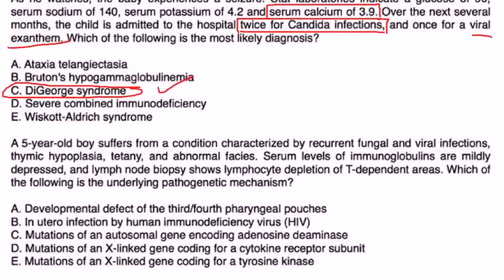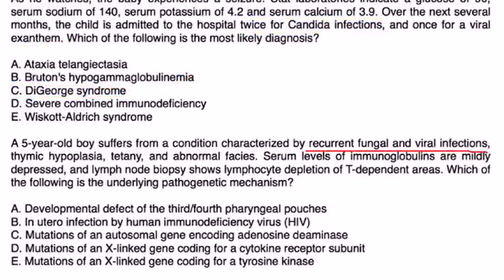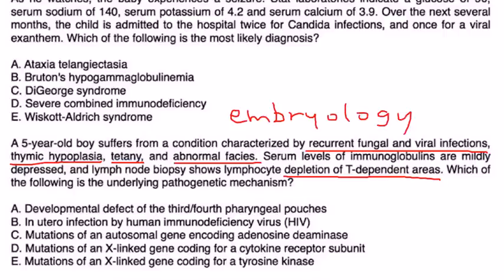Next one: a five-year-old boy suffers from a condition characterized by recurrent fungal and viral infections, thymic hypoplasia, tetany, and abnormal facies. Serum levels of immunoglobulins are mildly depressed, and lymph node biopsy shows lymphocyte depletion of T-dependent areas. What is the underlying pathogenetic mechanism? Again, they're definitely describing DeGeorge syndrome. This is an embryology type of disorder. It happens because the chromosome deletion involving chromosome 22 leads to the failure of development of the third and fourth pharyngeal pouch, and that leads to the thymus and parathyroid gland not developing properly.